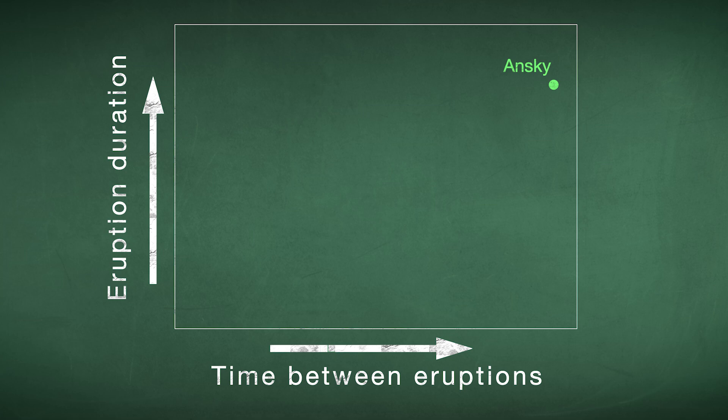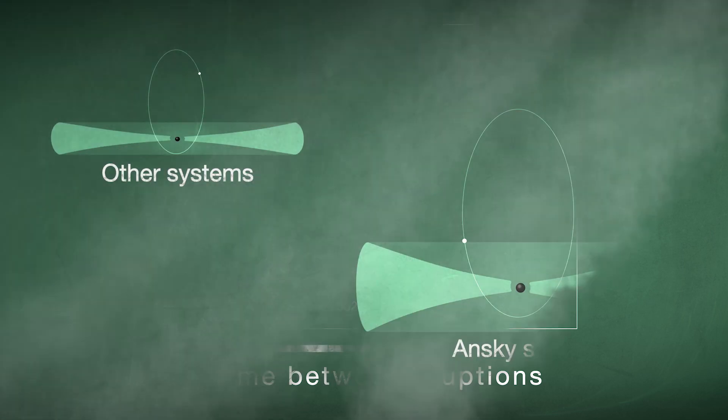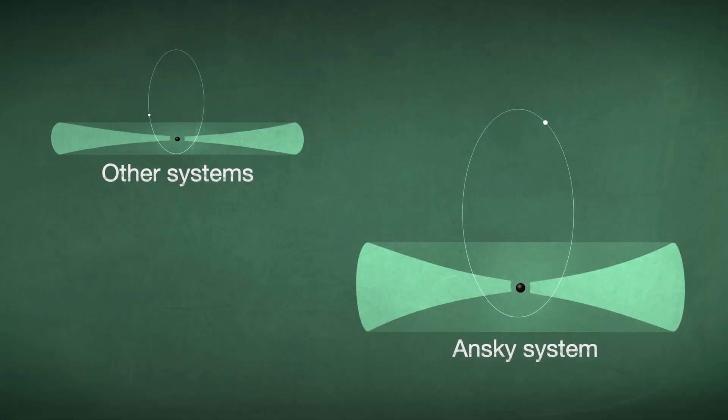ANSCE's outbursts are the longest of all the QPEs astronomers have studied, with eruptions every 4.5 days or so that last approximately one and a half days. That may be caused by a larger disk engulfing an object farther away.